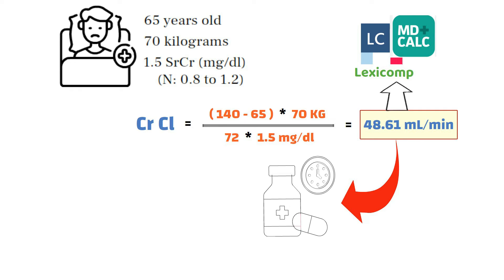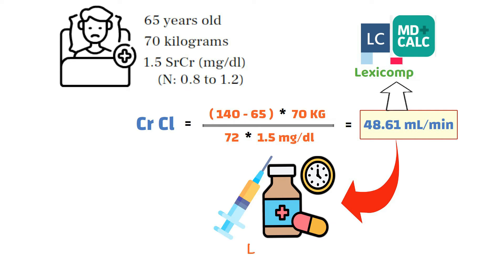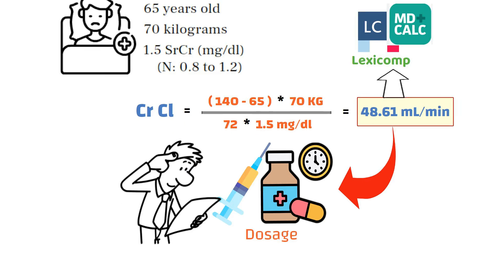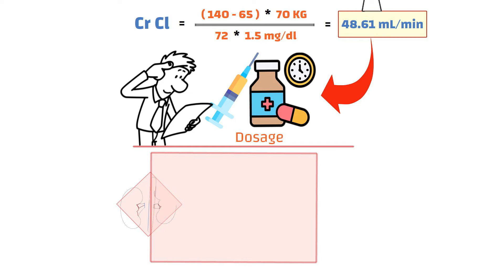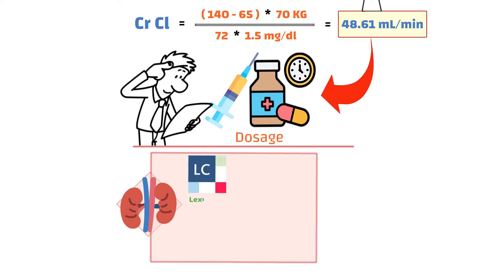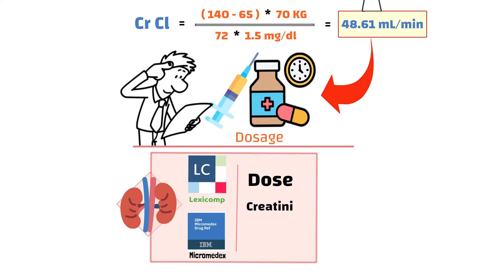Once you have obtained the patient's creatinine clearance, you can use this value to calculate the appropriate dosage of medication. It is important to keep in mind that the appropriate medication dosage is different for different medications, and many medications require dose adjustment based on the patient's renal function. The dosage can be adjusted using drug referencing resources such as LexiComp and Micromedex, which provide information on the appropriate dose of each drug based on the creatinine clearance value.